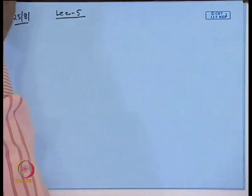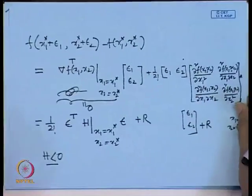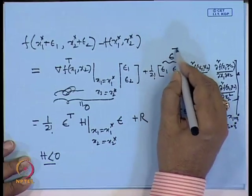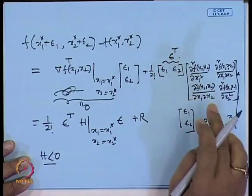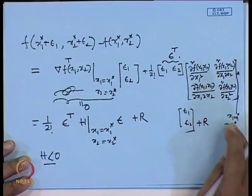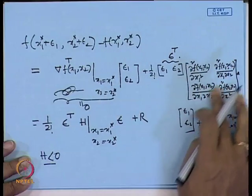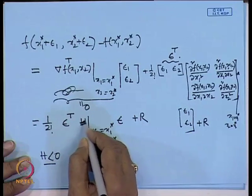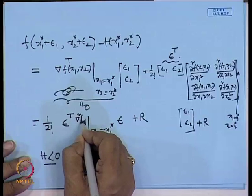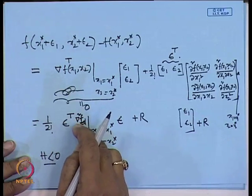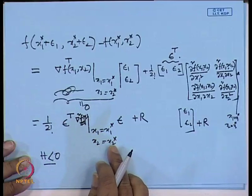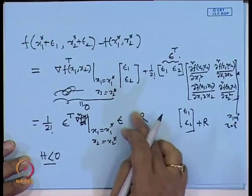We write the first-order term as zero and the second-order part as one-half times epsilon transpose times the Hessian matrix, where epsilon is the vector with components epsilon1 and epsilon2. The Hessian matrix is the matrix of second derivatives of the function evaluated at x1 = x1*, x2 = x2*. This quadratic form can be written as the second gradient, i.e., del²f(x) evaluated at x1 = x1* and x2 = x2*. The higher-order remainder can be neglected.